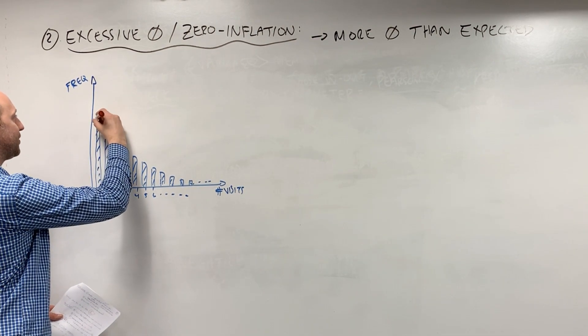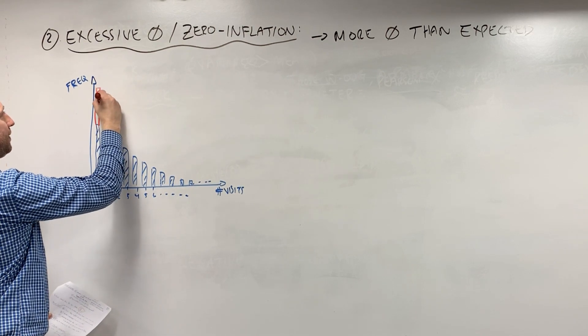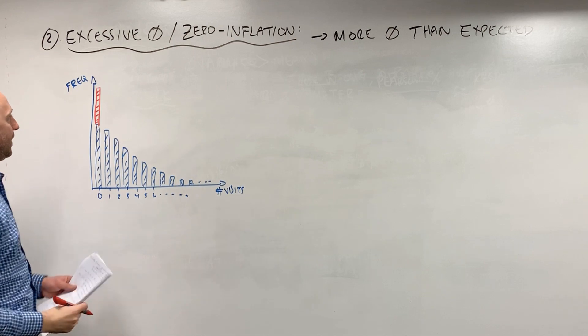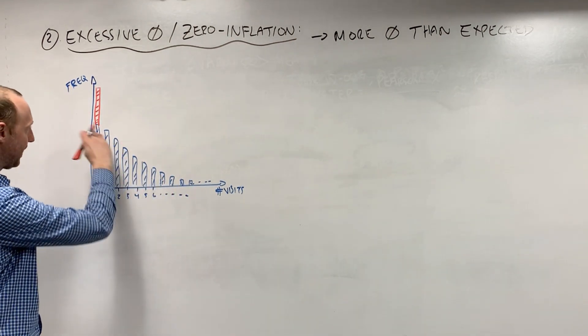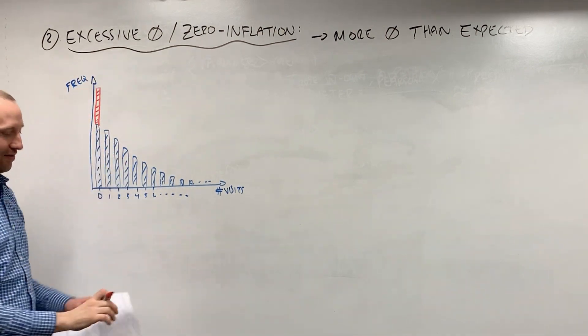And what excessive zeros are, is when, say, we have over here the number of zeros being actually much higher than we expect. We expect it to be this sort of nice smooth shape, and there's a lot of extra here.